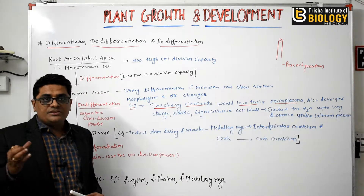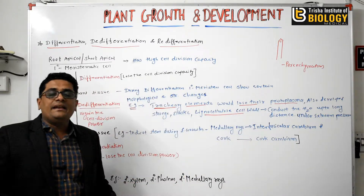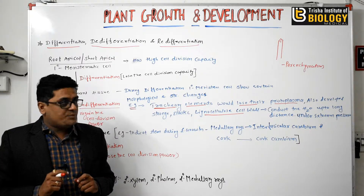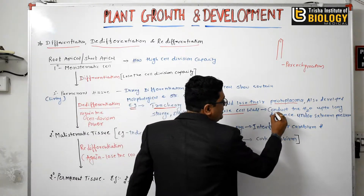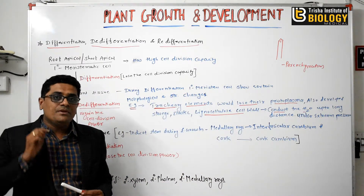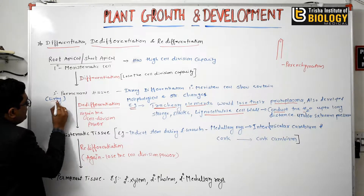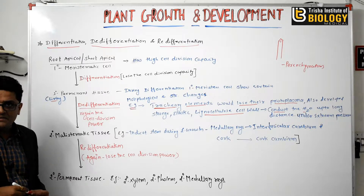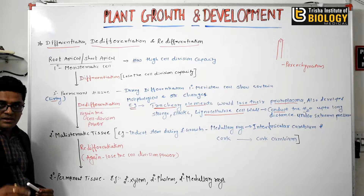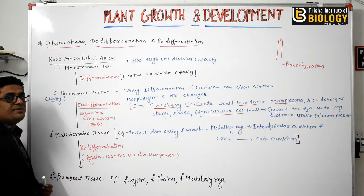Also, they develop a strong elastic lignocellulose cell wall, which is impermeable to water transportation. That is why xylem vessels and tracheids conduct water over long distances under extreme pressure. Now, once this primary permanent tissue — specifically living primary permanent tissue like parenchymatous cells — again regains the cell division power, that process is called de-differentiation.